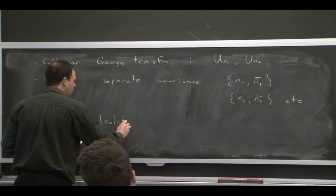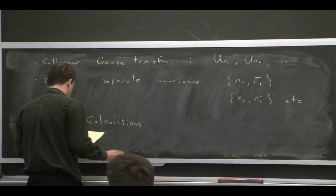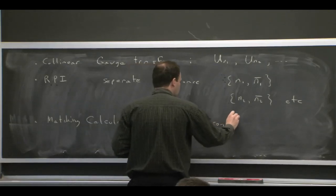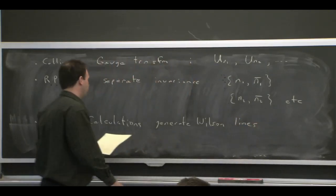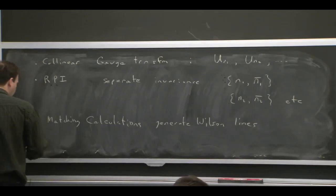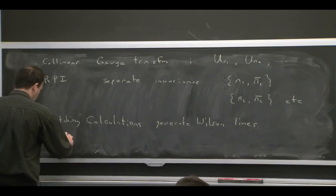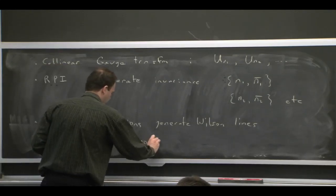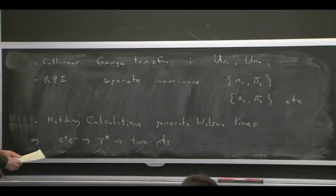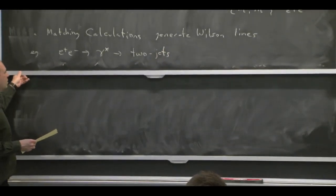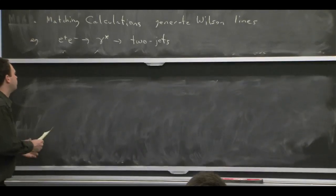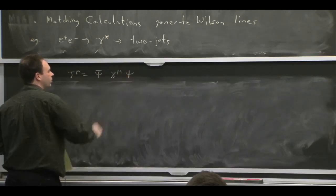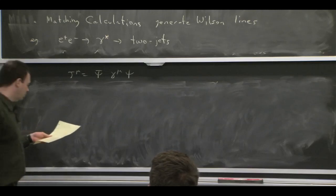And just like we had before, if you do matching calculations, you get Wilson lines. But now there can be more than one type. So we had this W Wilson line that showed up when we did matching calculations. And I want to give you here one example, which we'll come back and talk about more later on, and which we've already mentioned. And so consider our example of E plus E minus producing two jets.